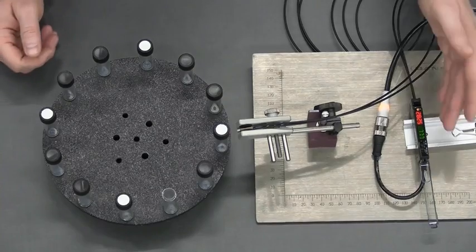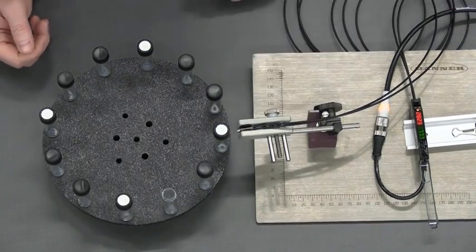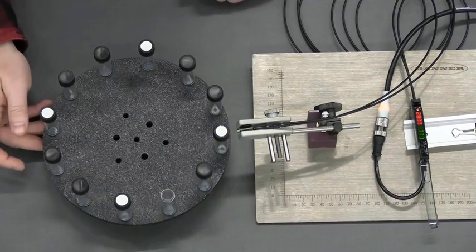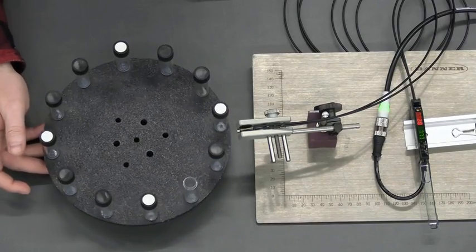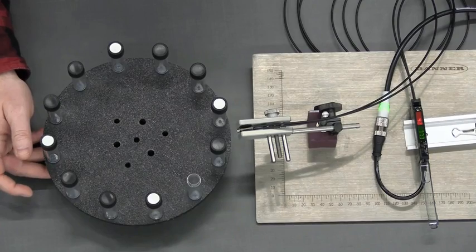Here we have a DFG amplifier configured for two-point static teach. We're using a diffuse fiber to sense the object. In this case, it's a vial. So the light condition is when the object is present, and the amplifier receives more light. The dark condition is going to be when the object is absent, and the amplifier receives less light.